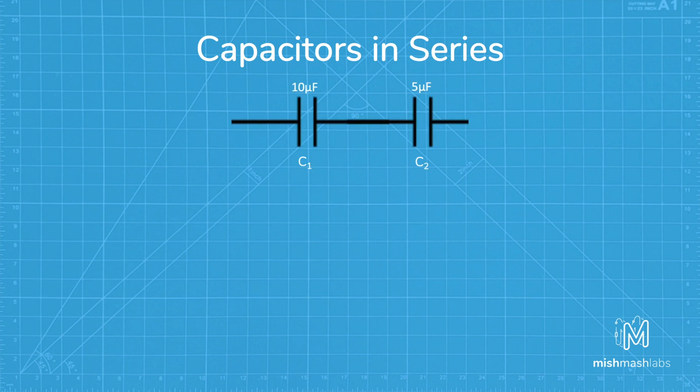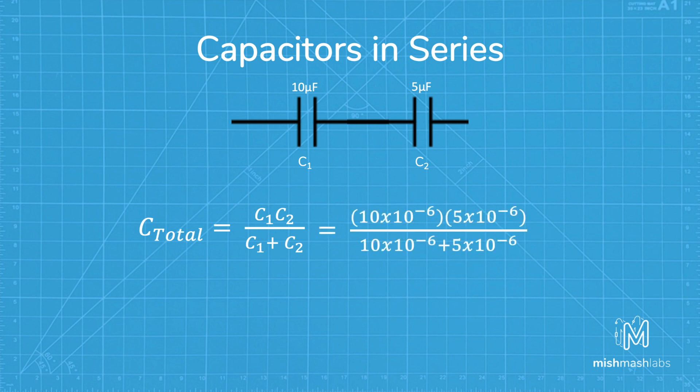If you only have two capacitors in series, you can use this formula, which is the product over the sum. In this example of 10 and 5 microfarads, we have a total capacitance of 3.333 microfarads.